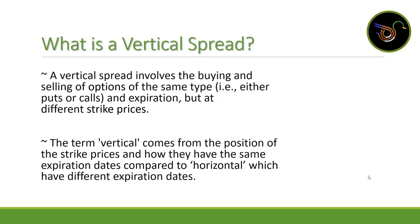So first, let's describe what a vertical spread is. A vertical spread involves the buying and selling of options with the same type — so either puts or calls — with the same expiration but different strike prices. The term 'vertical' comes from the position of the strike prices sharing the same expiration date, compared to a horizontal spread, which has different expiration dates.